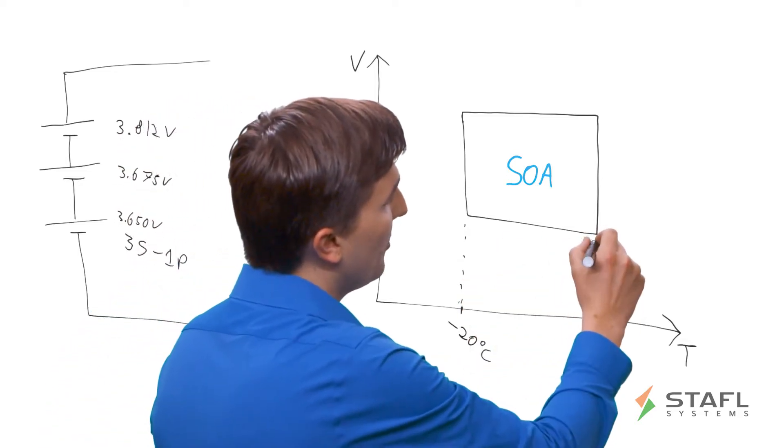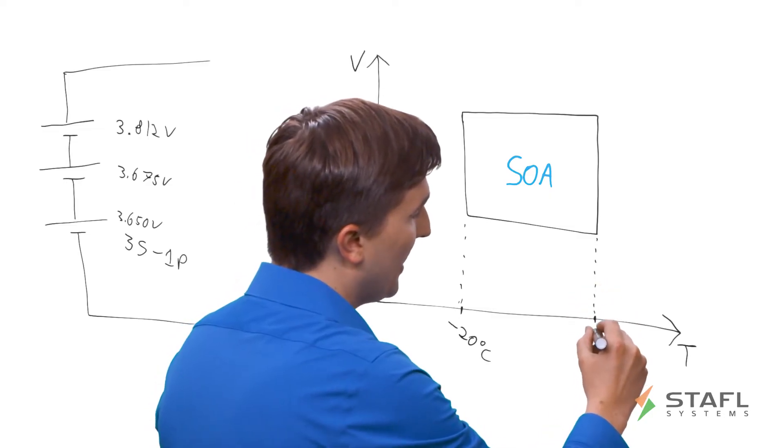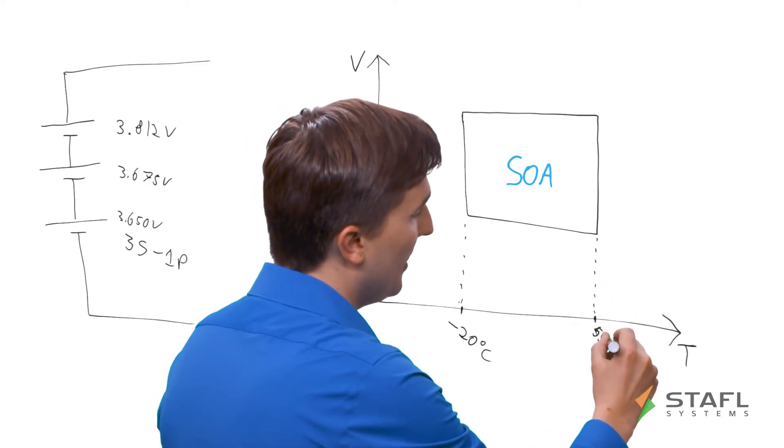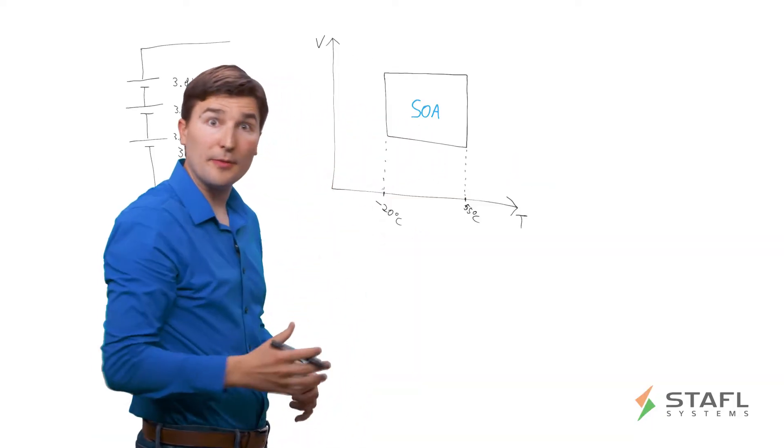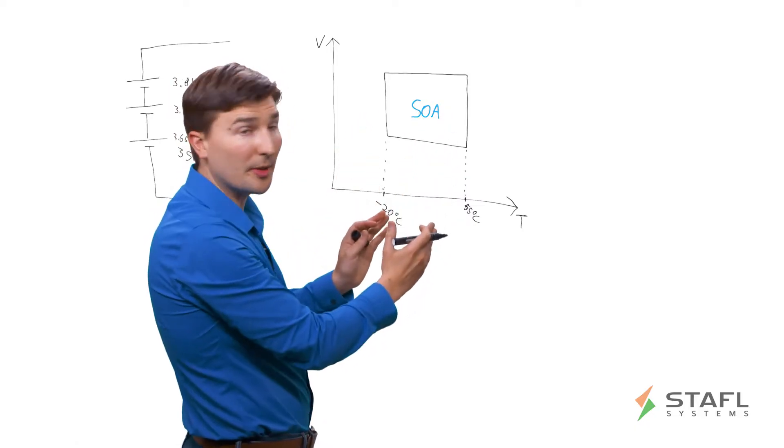On the other side of the square, of the SOA, is the maximum operating temperature of the cells. In this case, a typical example is about 55 degrees C. And so you want to keep all your cells within this temperature range.